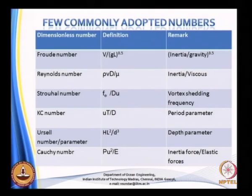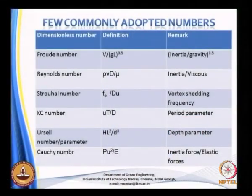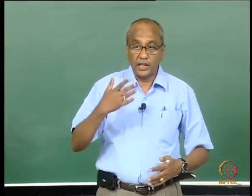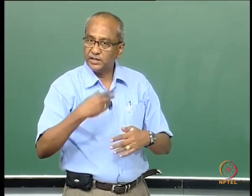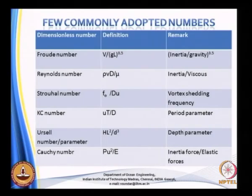Commonly adopted dimensionless numbers help us understand the type of flow. Based on the Reynolds number value we can determine whether flow is laminar or turbulent. The KC (Keulegan-Carpenter) number — if much higher, say 10–15, the drag component starts dominating; if exceeding 50, drag dominates more; if quite low, drag becomes negligible. The Froude number represents inertia versus gravity forces, while the Reynolds number represents inertia versus viscous forces.